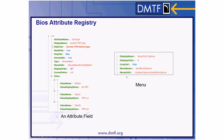On the right is an example of a menu object in the menus array. Here the menu name is 'Serial Port Options' and it sits under the System Options menu.